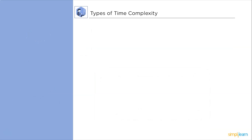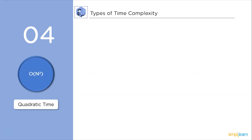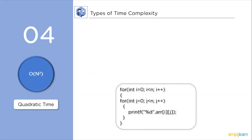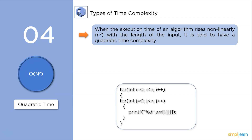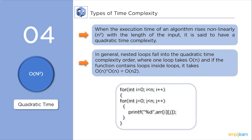Next up, quadratic time complexity. When the execution time of an algorithm rises non-linearly up to n² with the length of the input, it is said to have quadratic time complexity. In general, nested loops fall into the quadratic time complexity order, where one loop takes O(n) and if the function contains a loop inside a loop, then it multiplies. As you can see in this code, because of the nested loops, the time complexity grows to n².